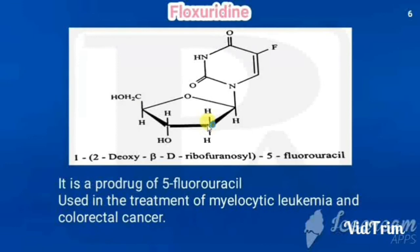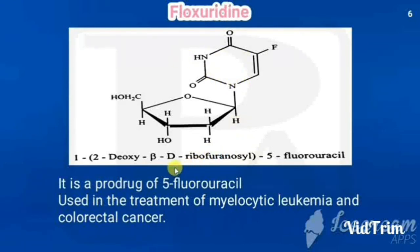For ribose, a hydroxy group should be attached at the second position. Here that hydroxy is absent, which is why it is called 2-deoxy. The first nitrogen is connected to D-ribofuranose, and the bond is in the beta configuration — so it is named (1-(2-deoxy-beta-D-ribofuranosyl)) 5-fluorouracil, or 1-(2-deoxy-beta-D-ribosyl)-5-fluorouracil. It is a prodrug of 5-fluorouracil — it is metabolized to give 5-fluorouracil. It is used in the treatment of myelocytic leukemia and colorectal cancer.